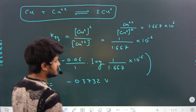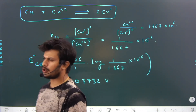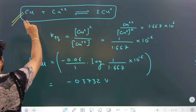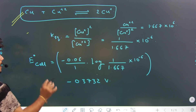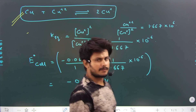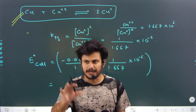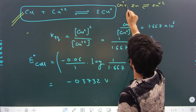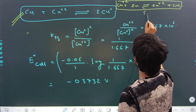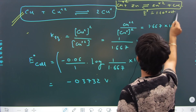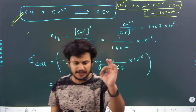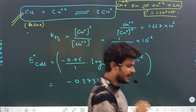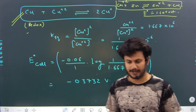Now the key question is: what reaction does this E°cell correspond to? This E°cell is for the complete redox reaction. It is not just a half reaction — just like in a Zn/Cu cell you compute the E°cell of the complete redox reaction, this is also a complete redox reaction with an E°cell of −0.3732 V.